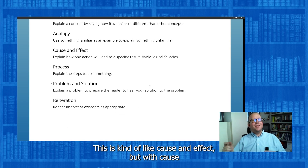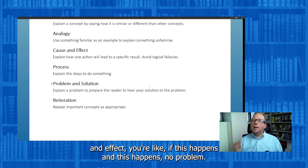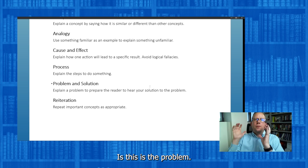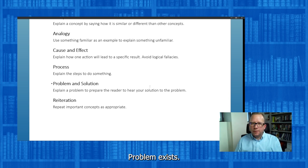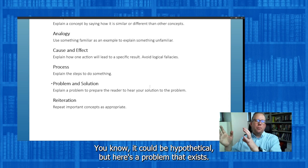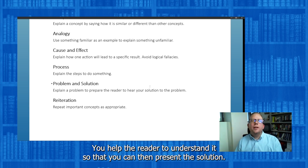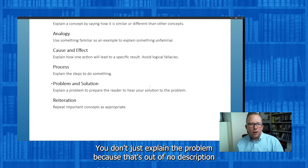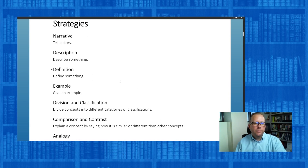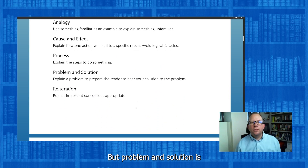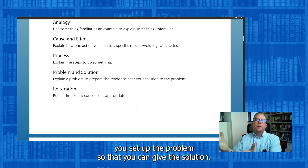Problem and solution is kind of like cause and effect, but with cause and effect you're saying if this happens, this happens. With problem and solution, this is the problem — it exists, maybe hypothetically — and you help the reader understand it so that you can then present the solution. You don't just explain the problem; you set it up so that you can give the solution. This might work really well with an introduction.